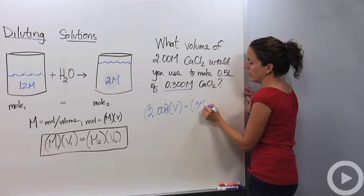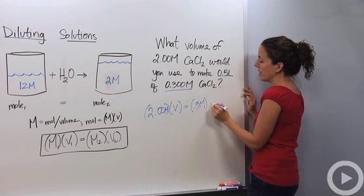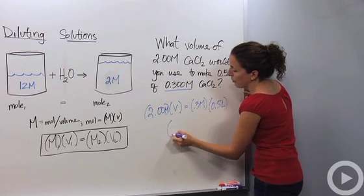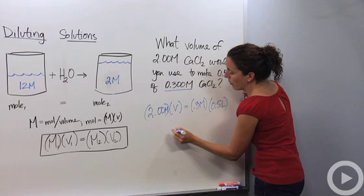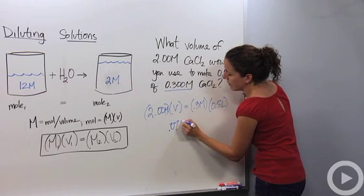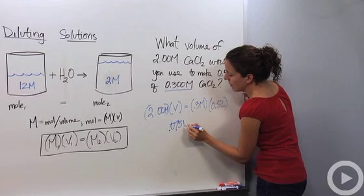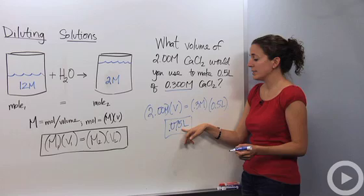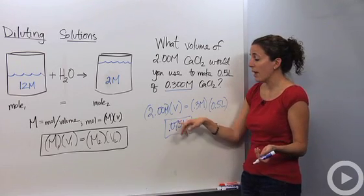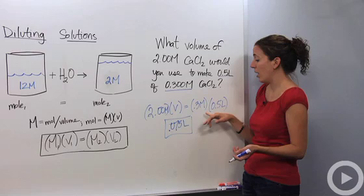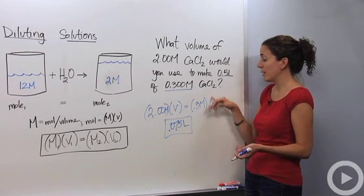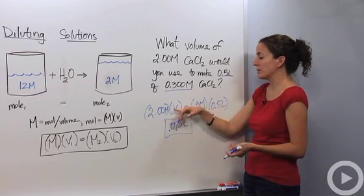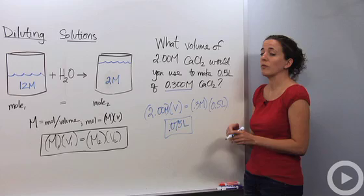Multiply it by 0.3 molar, that is my second molarity, times my volume. And I do the math and I end up with 0.075 liters. So what I am going to do is I am going to take 0.075 liters or 75 milliliters of my 2 molar solution and add 25 milliliters of water to make my 0.3 molar solution. Because I know the number of moles of calcium chloride is the same in both scenarios.